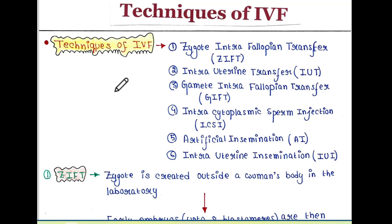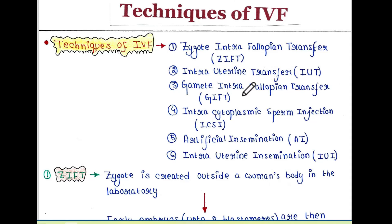Today I will talk about different techniques of IVF. Mainly there are 6 techniques of IVF: Zygote Intrafallopian Transfer or ZIFT, Intrauterine Transfer or IUT, Gamete Intrafallopian Transfer or GIFT, Intracytoplasmic Sperm Injection or ICSI, Artificial Insemination or AI, and Intrauterine Insemination or IUI. Now I will talk about them one by one.